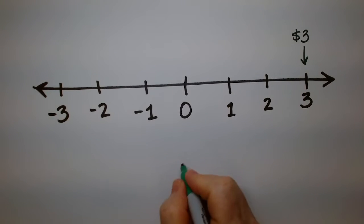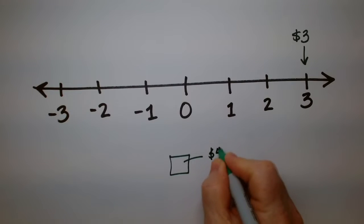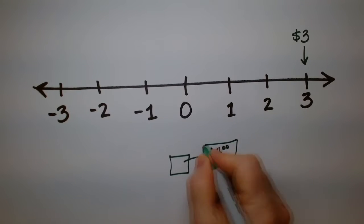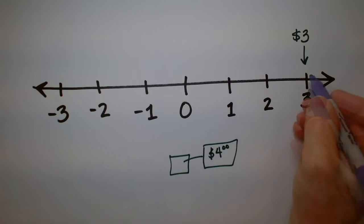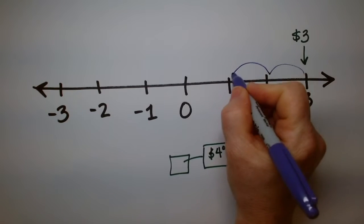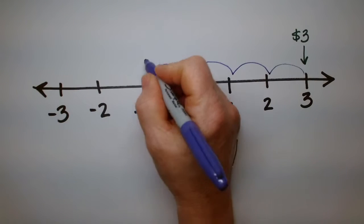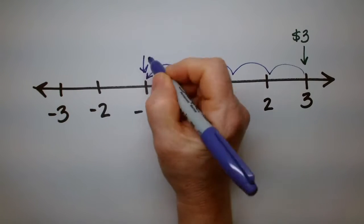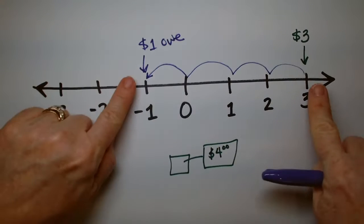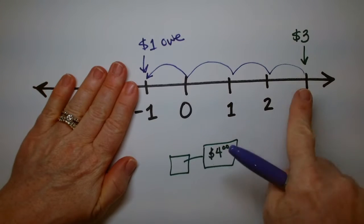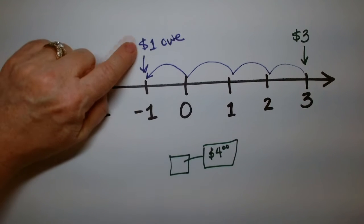Now imagine you want to buy a toy, but it costs $4. Can you buy it? Absolutely. You can buy it if you borrow — you'll spend three of your own dollars, but you've got to borrow that last dollar from someone else. So you owe $1, but the total span is $4, so you could buy it, but you're going to owe somebody $1.